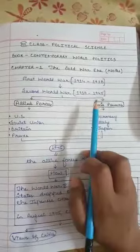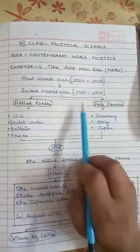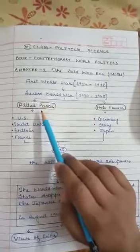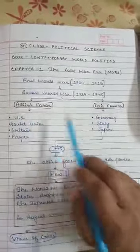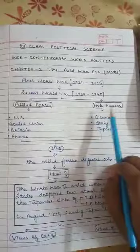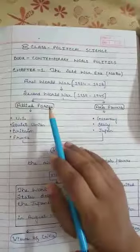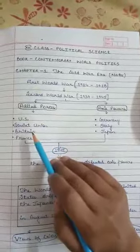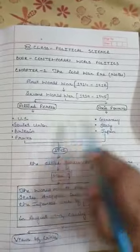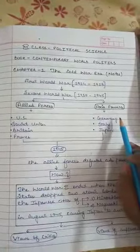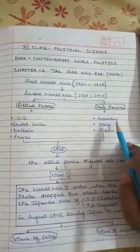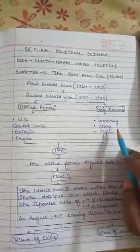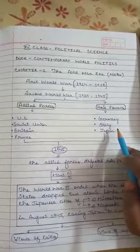In the Second World War, the countries involved were the Allied Forces — one group — and the other was the Axis Powers. The Allies comprised of the US, Soviet Union, Britain, and France, while the Axis had Germany, Italy, and Japan.